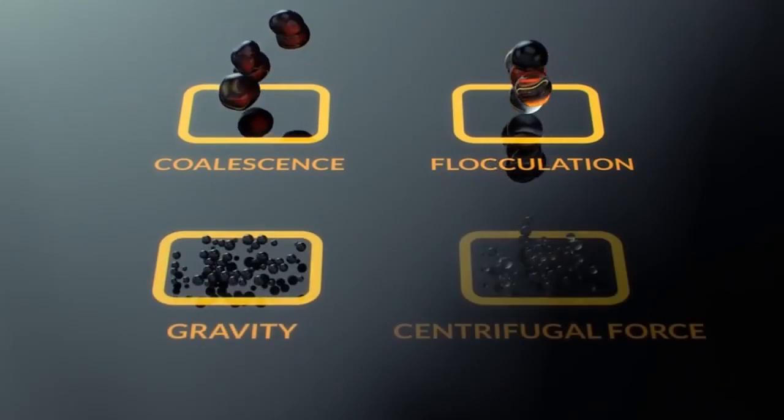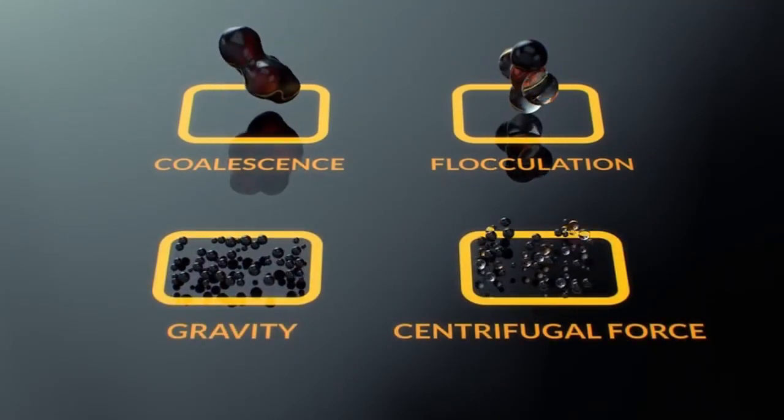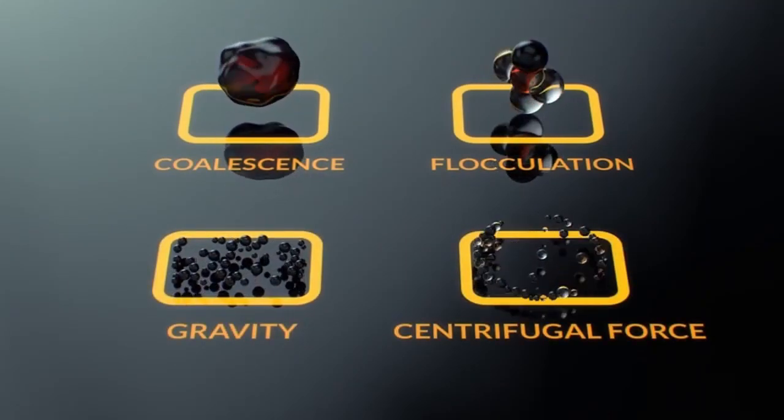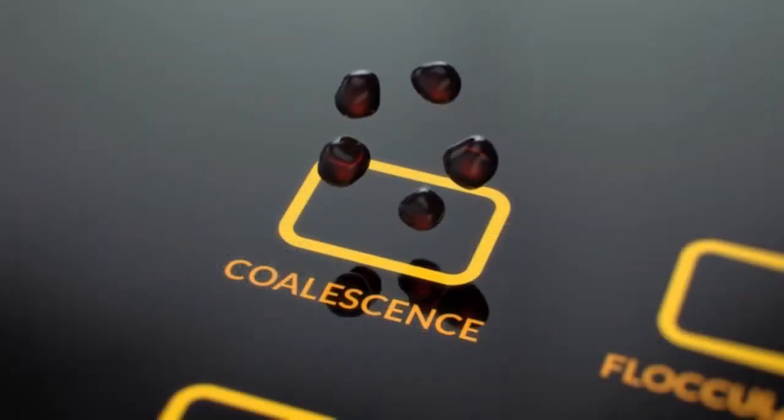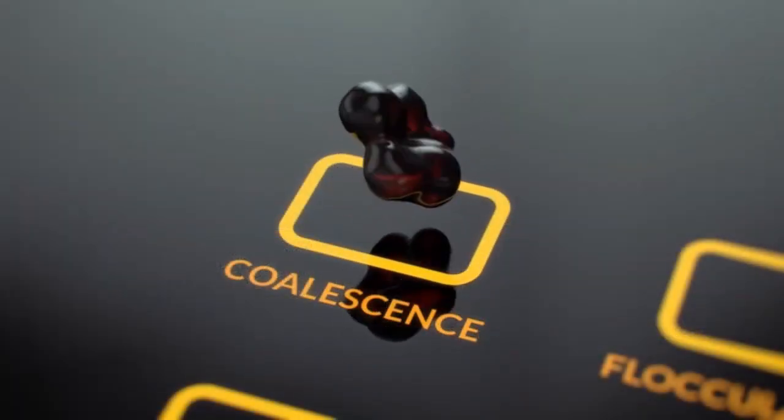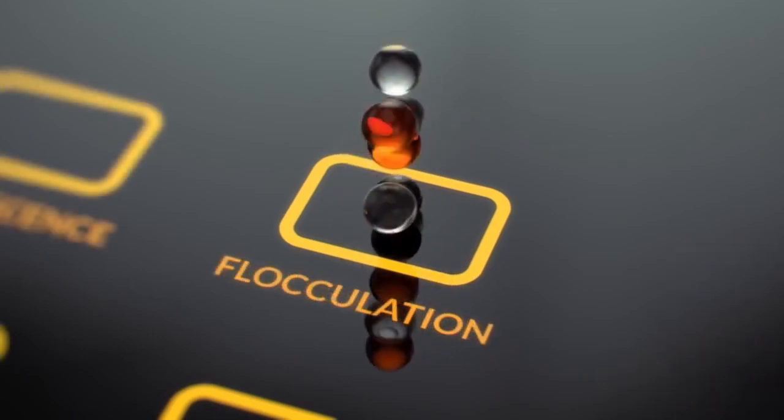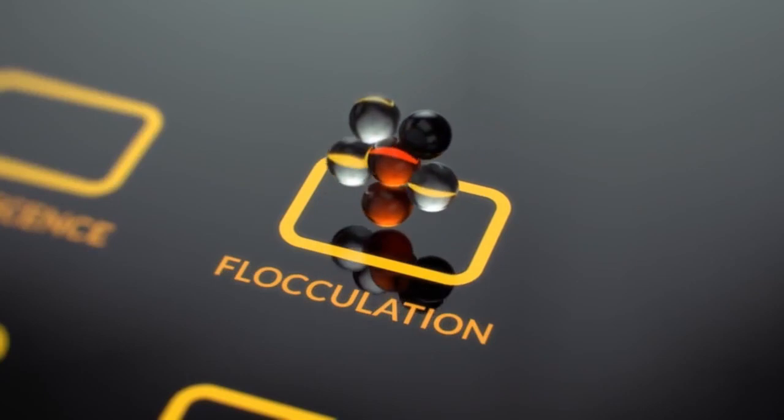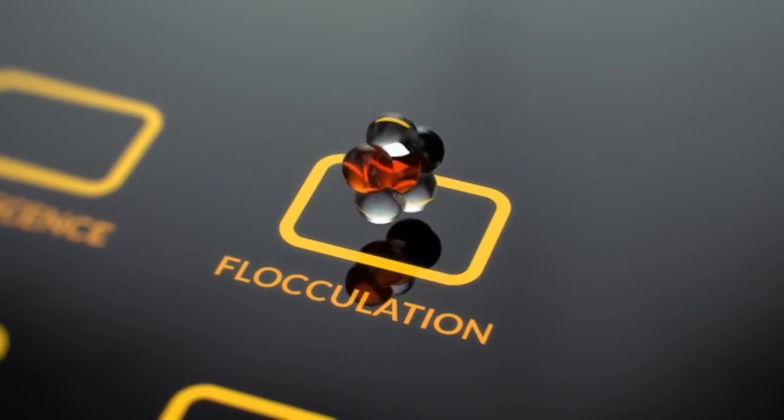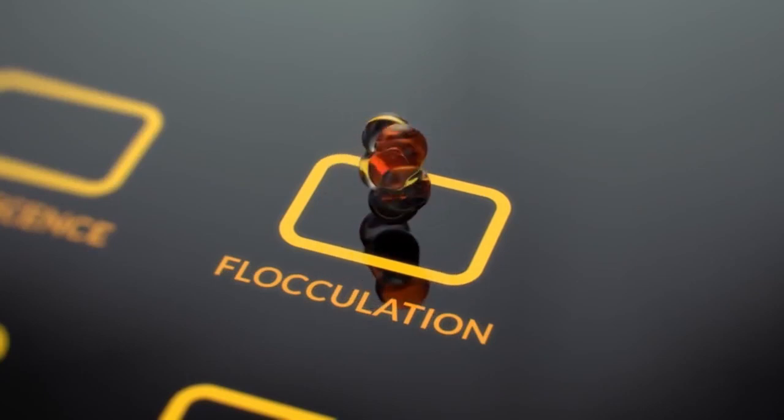Most types of separators use many of the same physical processes. Coalescence is when several small oil droplets come together and form one larger droplet. Flocculation is when two or more particles aggregate, stick together, without losing their individual boundaries.